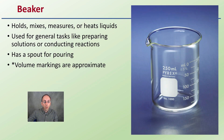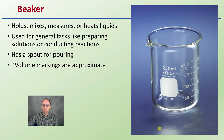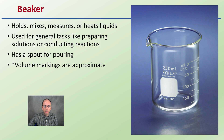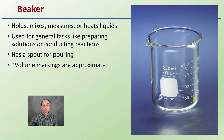First, one of the most common pieces is a beaker. A lot of students get this confused with other things. It holds, measures, and heats liquids, and has a spout for pouring. Keep in mind, a key thing with a beaker: while it will be utilized quite a bit, its volumes are approximate — plus or minus 5%. So these are approximate volumes, not precise volumes.